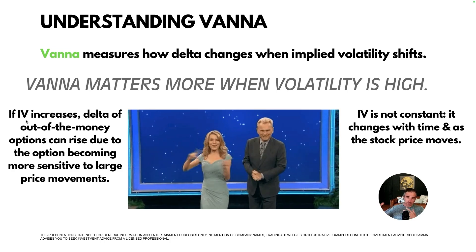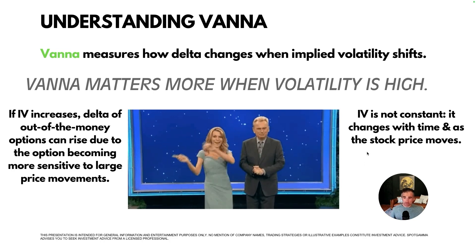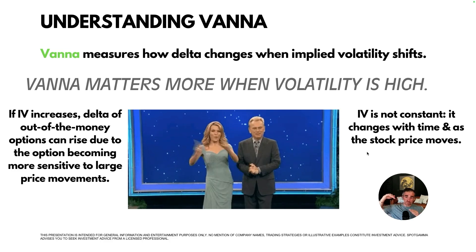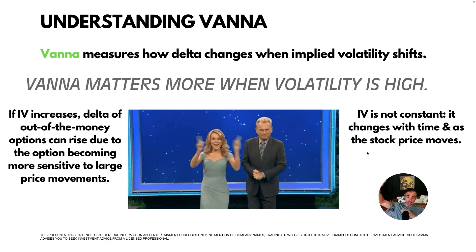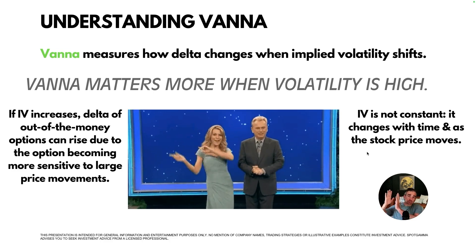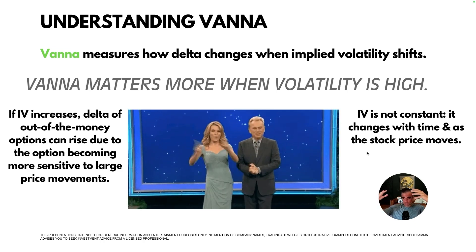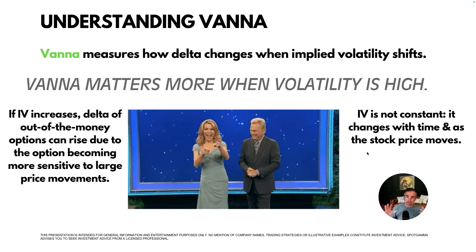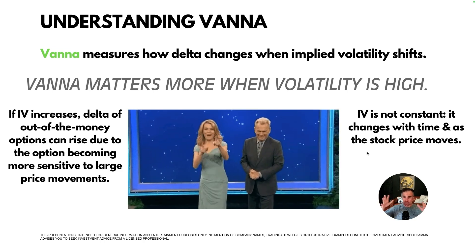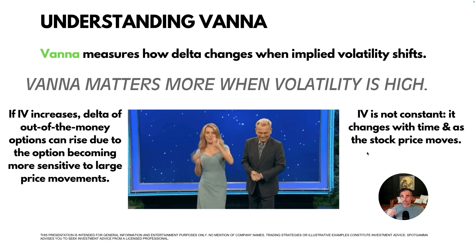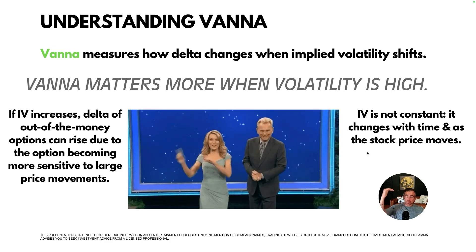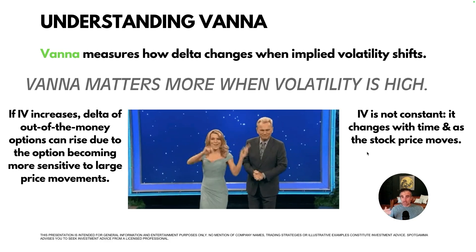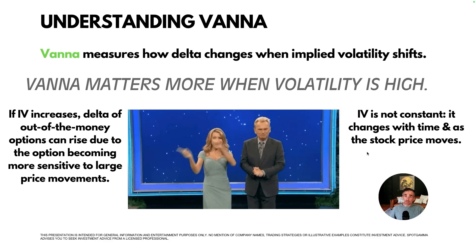Another thing to note: implied volatility is not constant. Those who understand fixed-strike volatility or skew know that downside options tend to have higher implied vol. So if a stock starts to move down, implied volatility changes — it's a dynamic concept when thinking about volatility surfaces. When volatility increases or jumps significantly, the impact of Vanna on Delta matters a lot more.